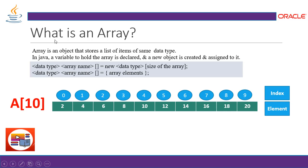The 'new' keyword creates an instance or an object of that array, followed by the data type and size of the array. This is the way we declare. Another way we can declare or initialize in one step is: data type, name, bracket, then the array elements. So you can declare and initialize in one step.